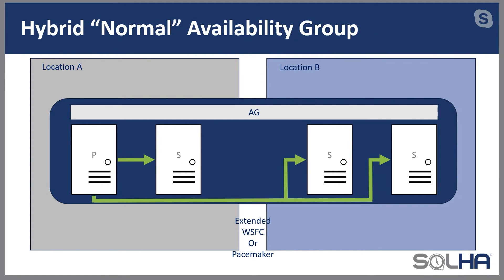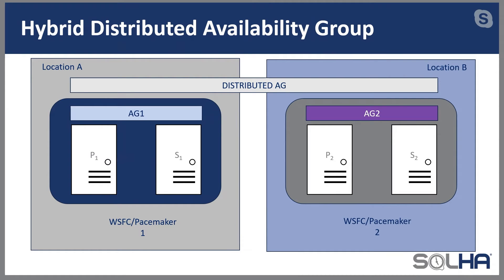Let me explain the architecture and why I really like this. In a distributed AG, which is purely a SQL Server concept — you won't see this in any cluster mechanism — if I'm on-premises at location A and I want to go to location B, I'm setting up two distinctly different clusters, each with their own availability group. Each of these has a primary. This primary here is known as the global primary; the other one is known as the forwarder. The global primary sends things to both its own secondary replicas as well as the forwarder, and then the forwarder synchronizes everything on its end.